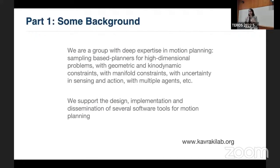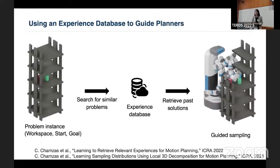So for the first part, as Joydeep said, we are a group that has deep expertise in motion planning. So sampling based planners for high dimensional problems, besides the probabilistic roadmap, planners that work with geometric and dynamic constraints, with manifold constraints, uncertainty, sensing and action, multiple agents. And also we are a group that supports a lot of the design, implementation and dissemination of software that will enable others to do things that have not been done by us or anybody else. So here is one of the posters that we will be presenting outside today by Konstantinos Chamzas, who is sitting over there. And he is looking at how to use an experienced database to guide high dimensional planners for difficult tasks. So he stores, and he can tell you how, problems and experiences in a database that he retrieves once he's given a new problem instance, that is a new workspace, a new start and a goal, and uses this retrieved solution to find quickly a new solution. And he has worked a lot on retrieval functions, both manually, and also he has learned retrieval functions.